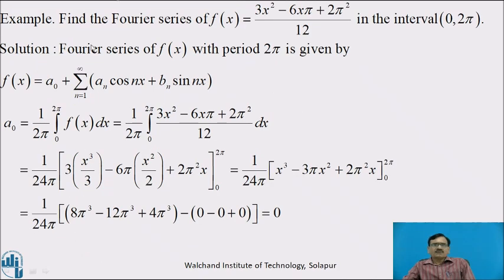Now we will see the example. Find the Fourier series of f(x) = (3x² − 6xπ + 2π²) / 12 in the interval 0 to 2π.